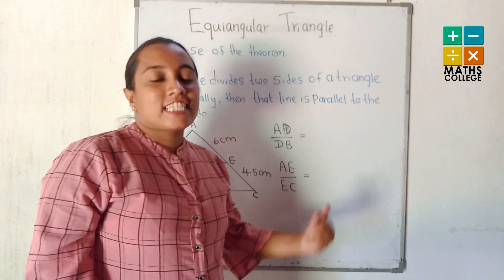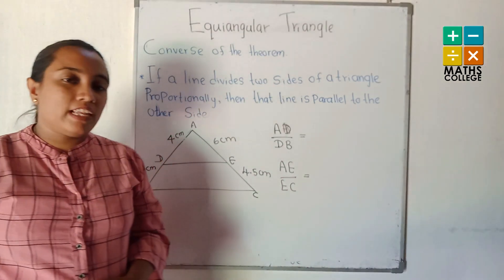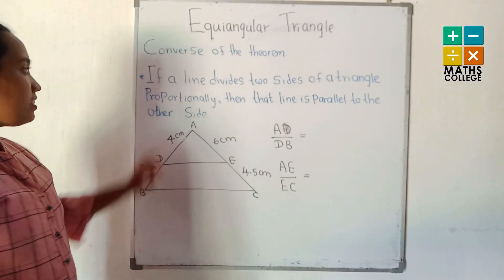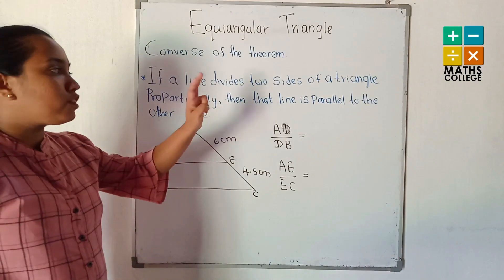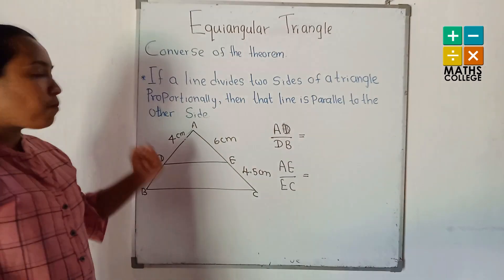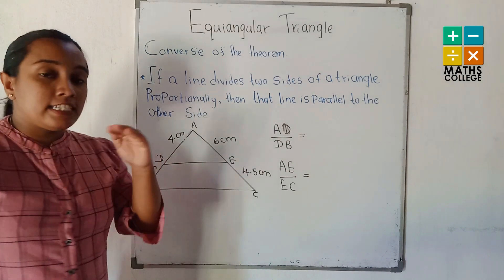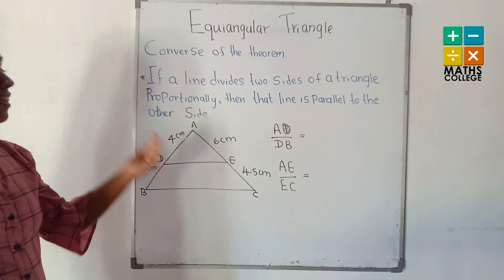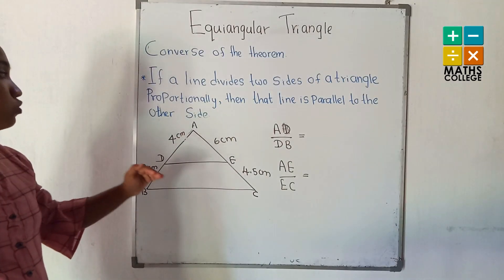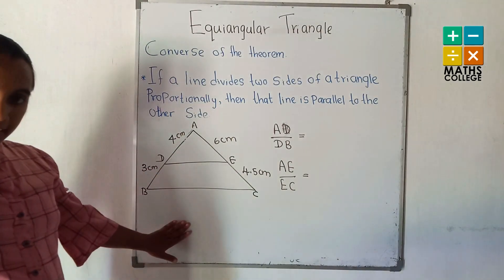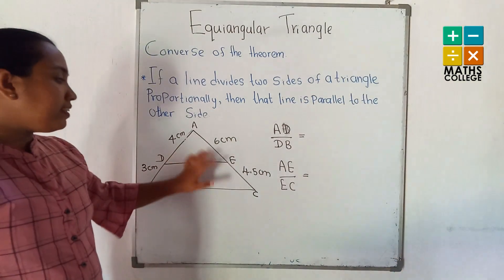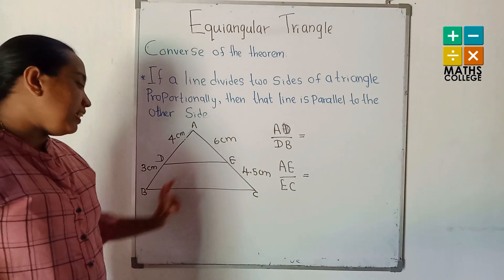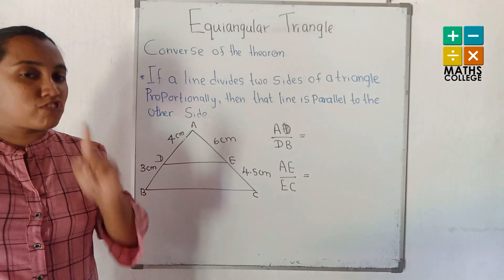Before the next example, let me explain the converse of the theorem. If a line divides two sides of a triangle proportionally, then that line is parallel to the other side. These two sides are divided by proportion, so DE is parallel to BC. Now check it.